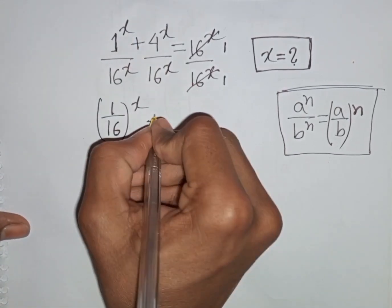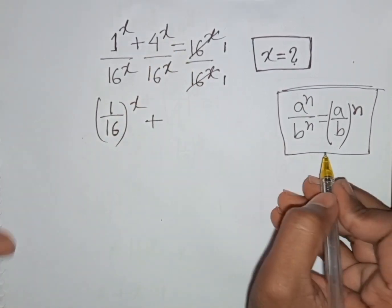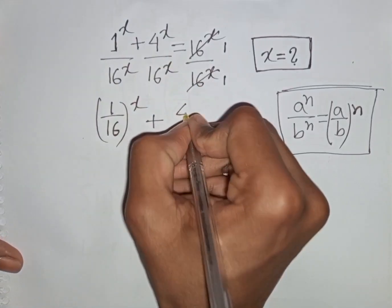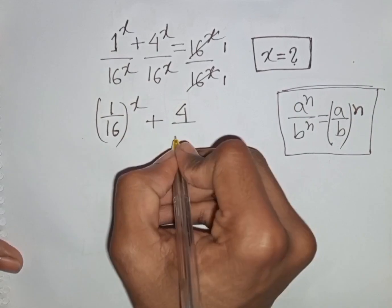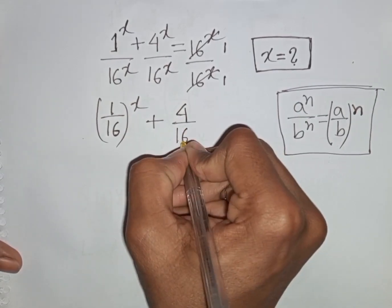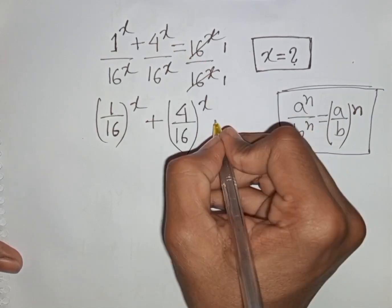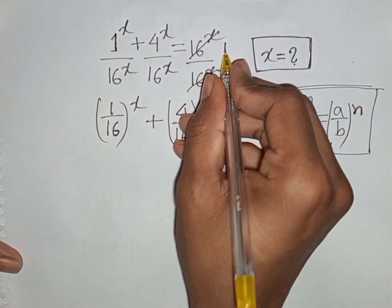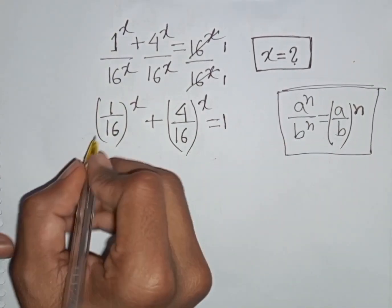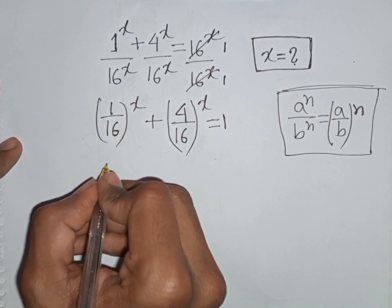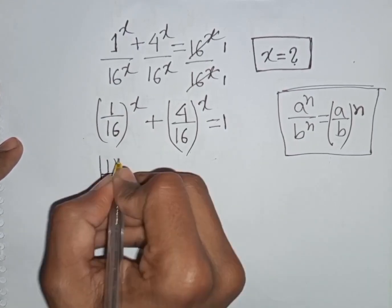Again, we have the same power x but different bases. According to the exponential rule, we write (4/16)^x = 1. Now, 1/16 can be written as (1/4)^2, since 4 squared equals 16.